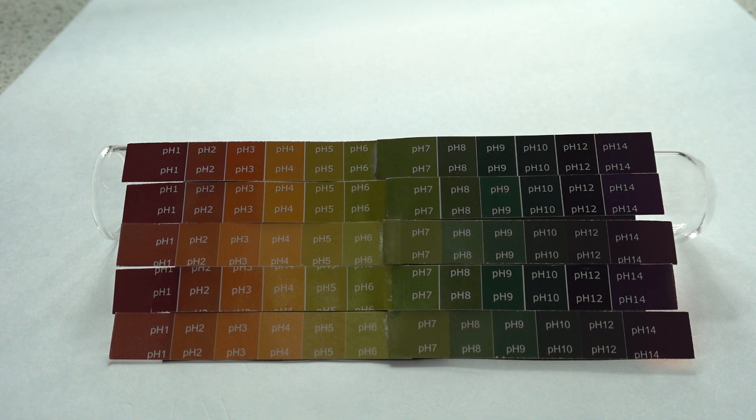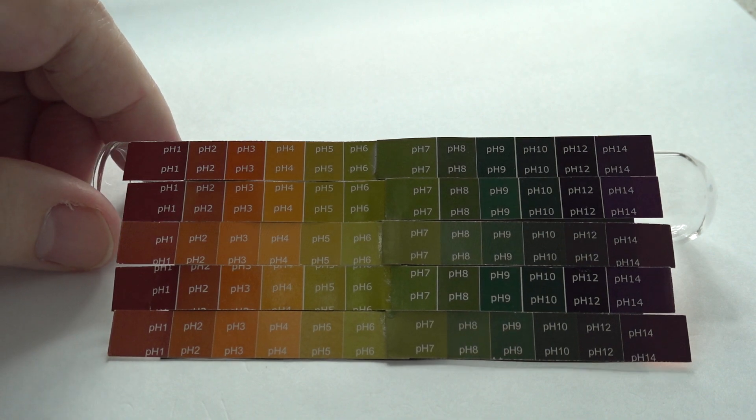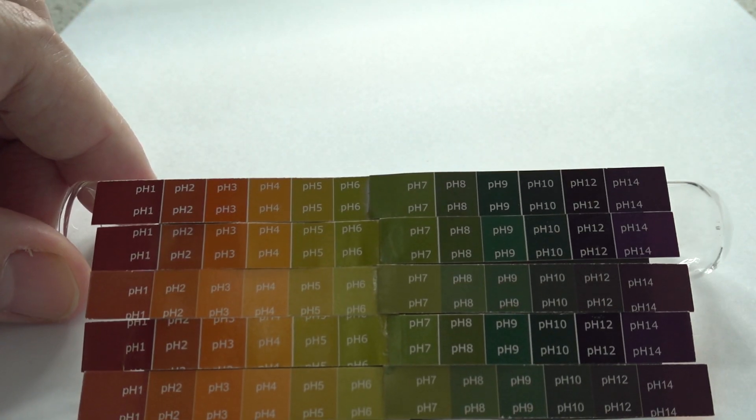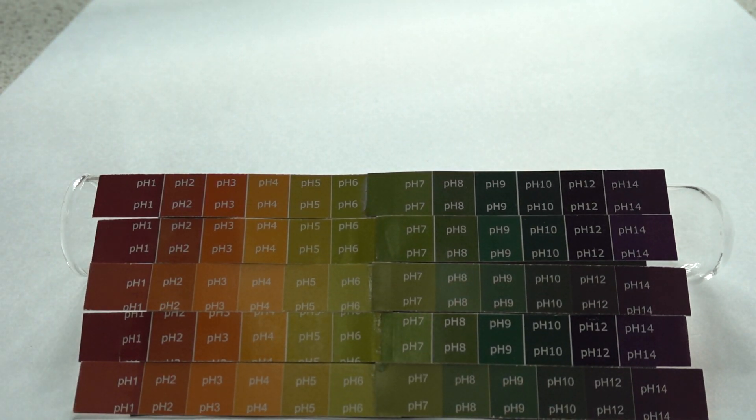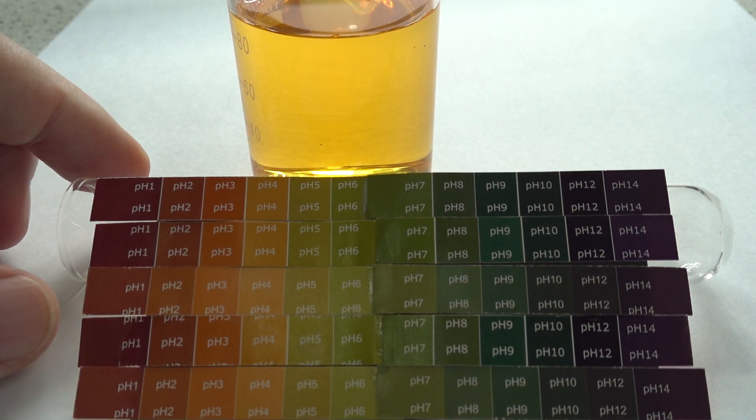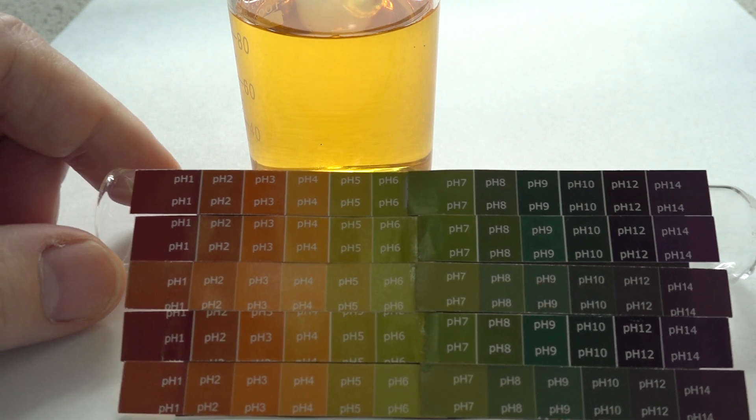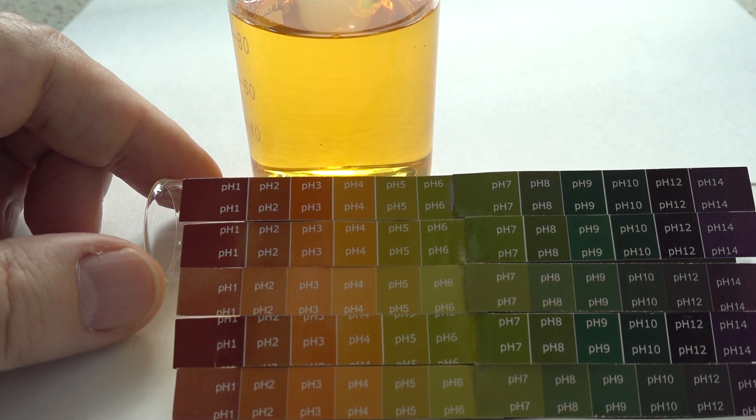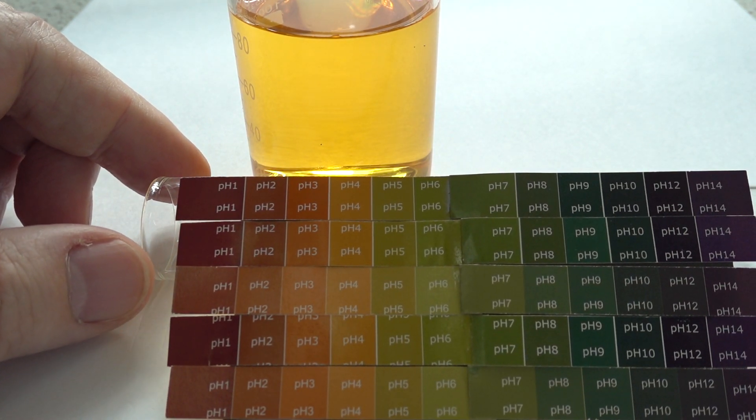So first we've got a pH scale from a commercial universal indicator. If we show a solution in the background there, the solution's clearly pale orange yellow. We might be tempted to call it around pH 4, so that's a weak acid. It's our first solution.